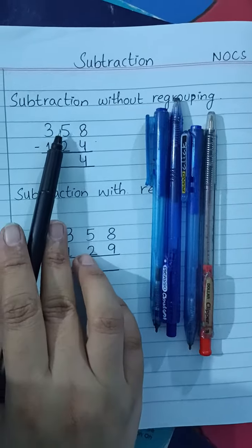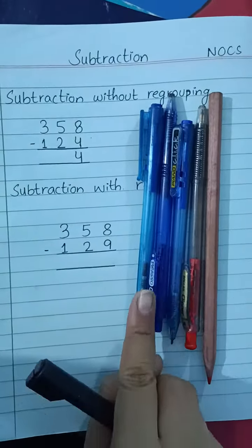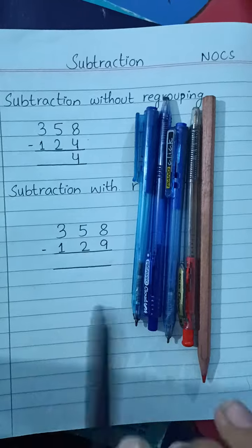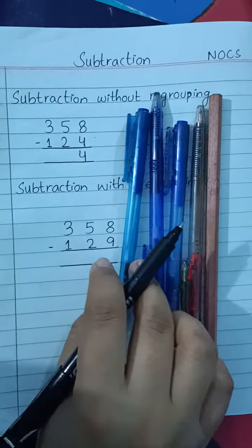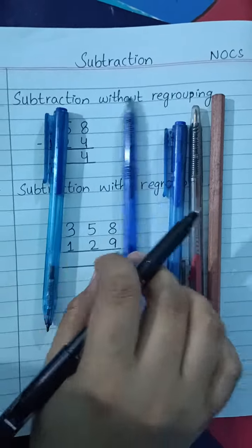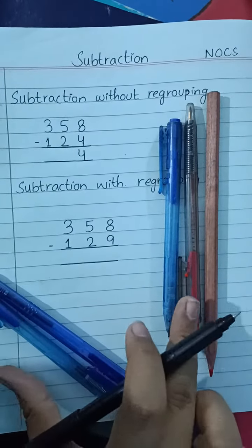Now the next number is 5. We have 5 pens and pencils. You have to subtract 2 from 5, so it means you have to remove 2 pens or pencils: 1, 2. The remaining numbers are 1, 2, 3.